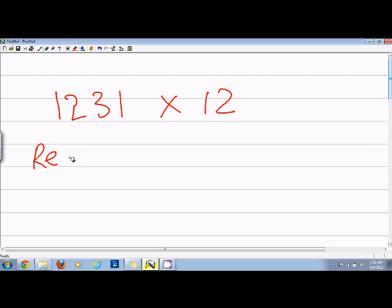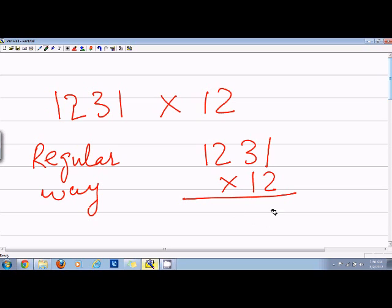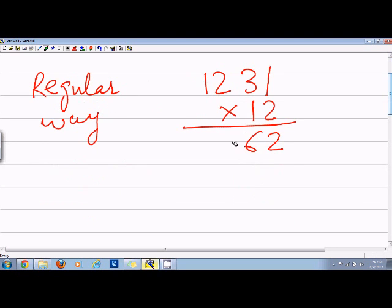The regular way will be to write 1231 and then multiply it by 12. So in this case I will say 2, 3 into 2 is 6, 4, 2, and then I say 1, 3, 2, 1.